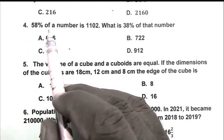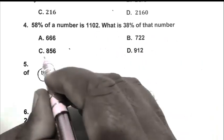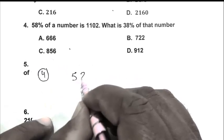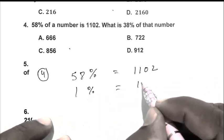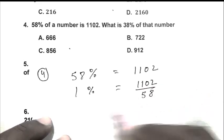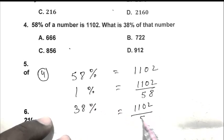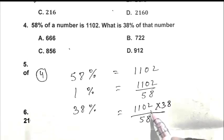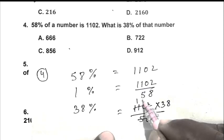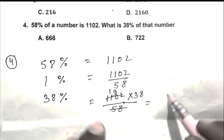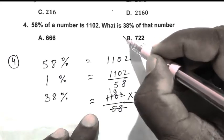So friend A is the right answer. Question number 4. 58% of a number is 1102. What is 38% of that number? So friend write it as 58% equal to 1102, 1% equal to 1102 upon 58. And 38% equal to 1102 upon 58 multiplied by 38.